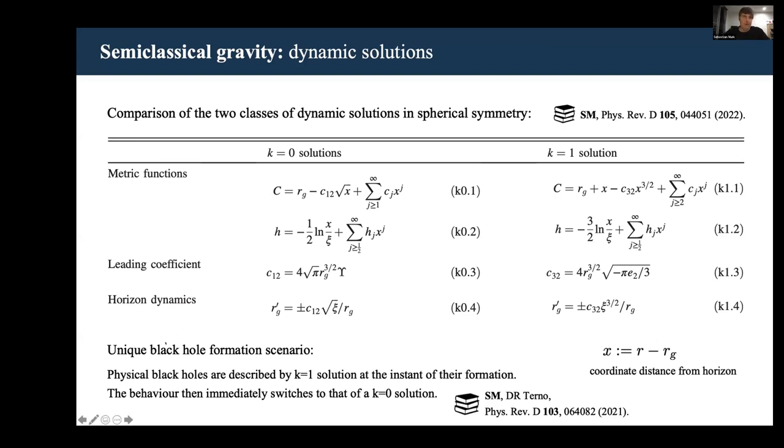What we found is that in spherical symmetry, the black hole formation scenario is unique, and it involves both of these classes of solutions. In particular, at the instant of formation, physical black holes are described by the k=1 solution. But the behavior then immediately switches to that of a k=0 solution. I should also point out this transition is continuous.